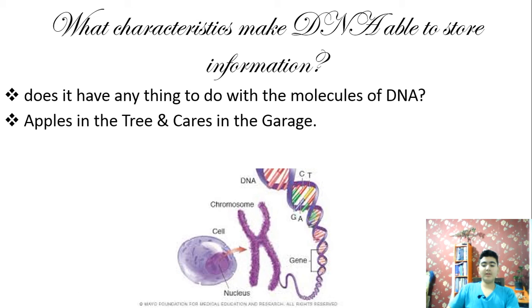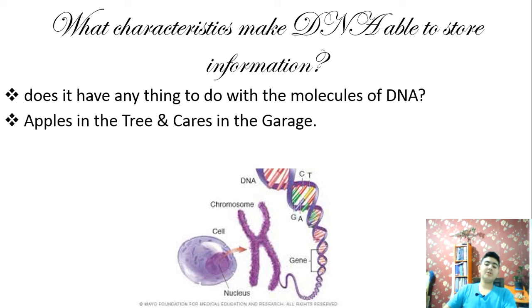We will talk about more on them later on. These molecules — A, C, T, and G — bind to each other in this order: A with T and C with G. You can remember this by the mnemonic 'apples in the tree,' meaning A with T — apple and tree — and 'cars in the garage,' meaning cytosine and guanine with each other.